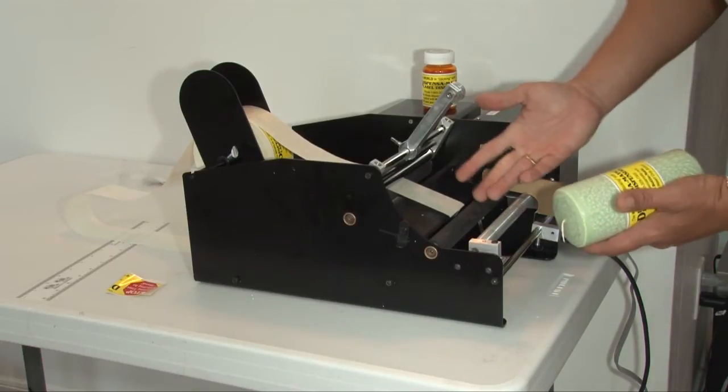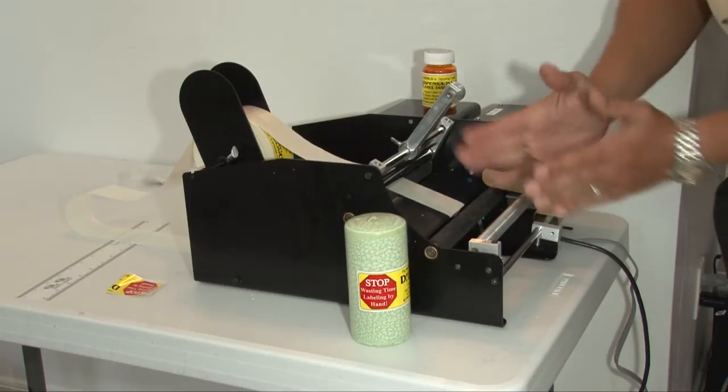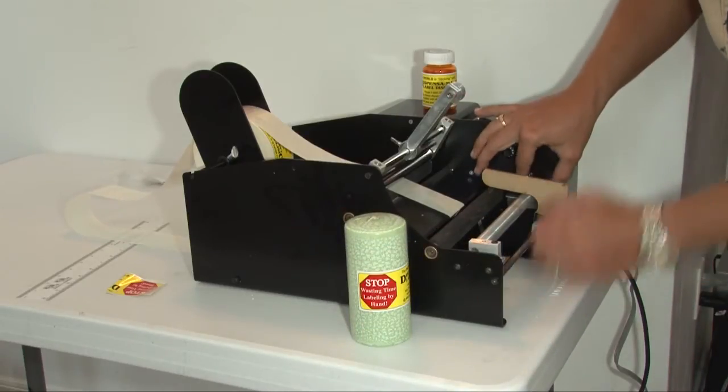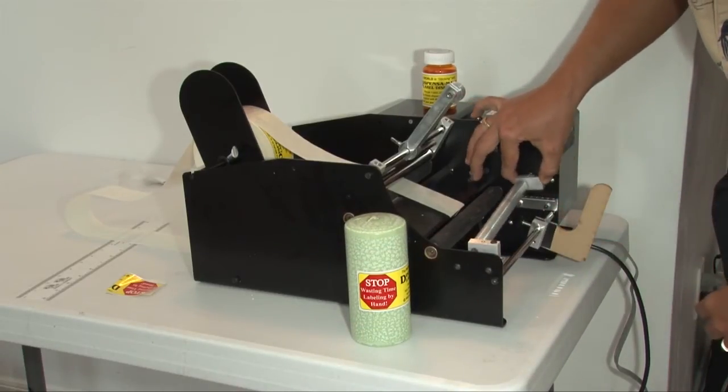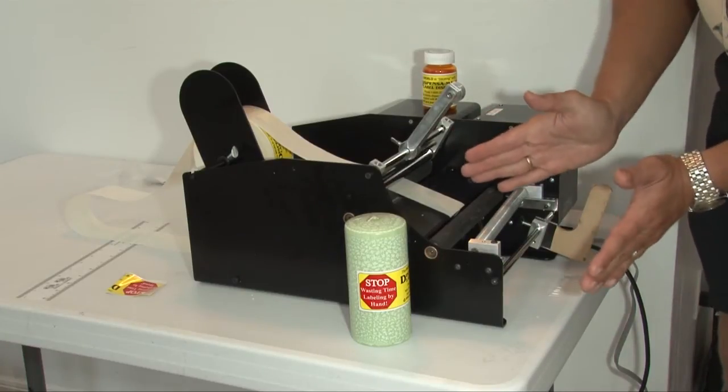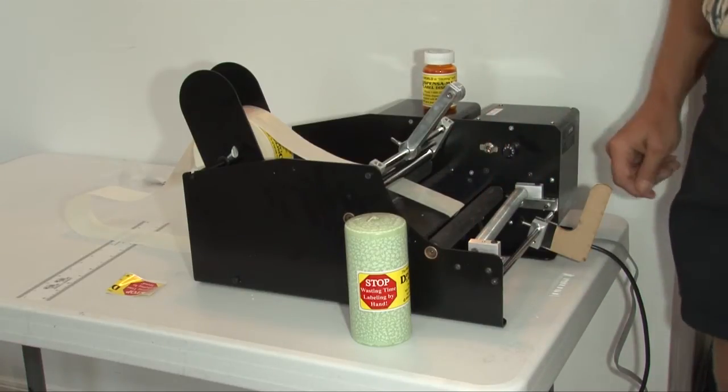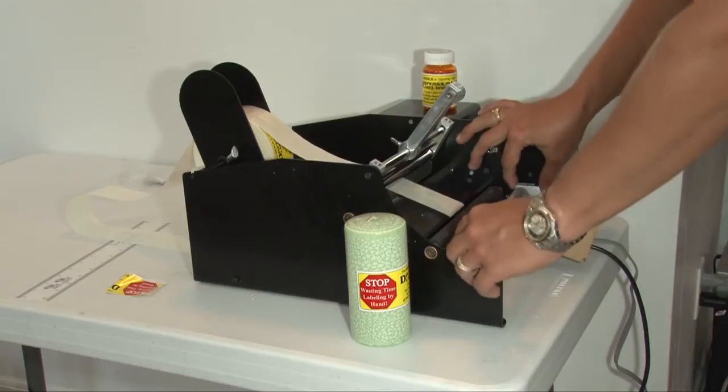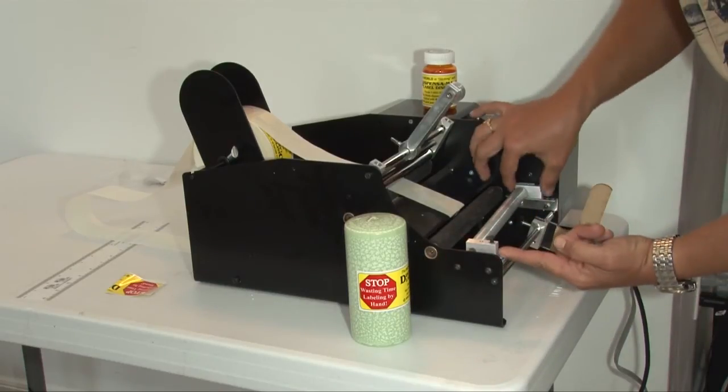It's very simple to set up. Only takes a few minutes. If you do have a taper container, you can adjust the roller further in on one side than the other. And it'll allow the machine to hold the bottle at a taper so that the label goes on as straight as it can.